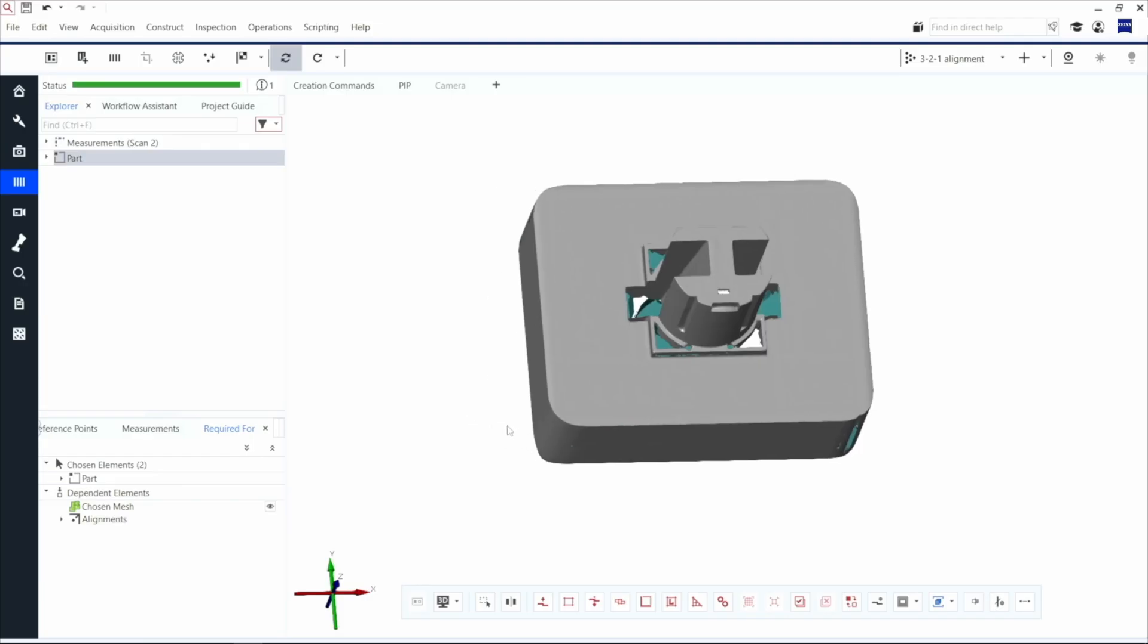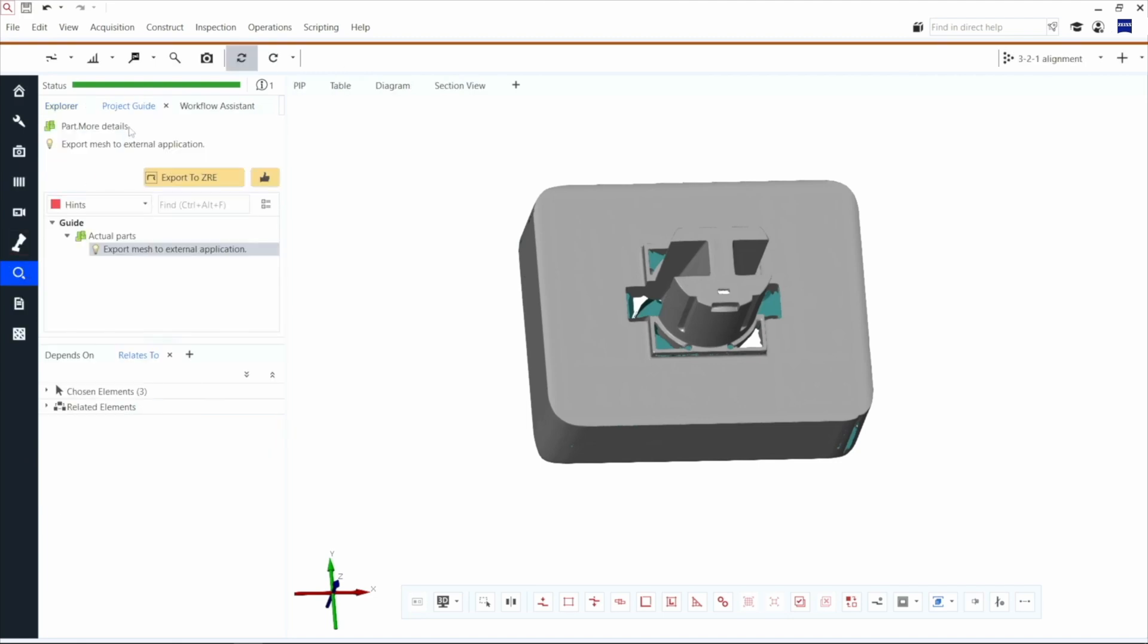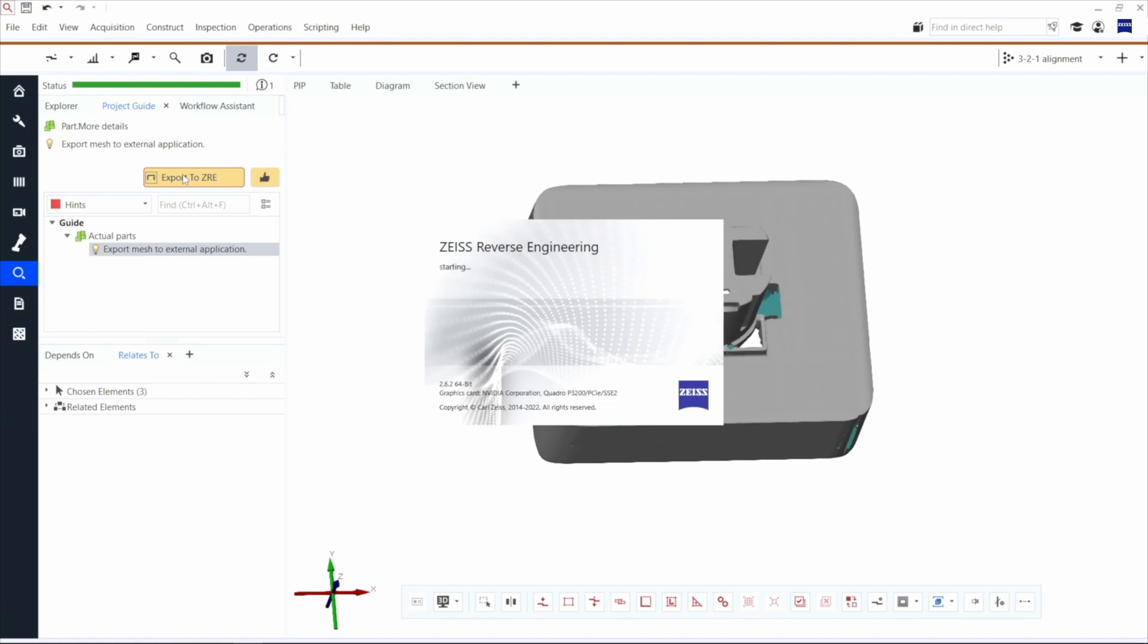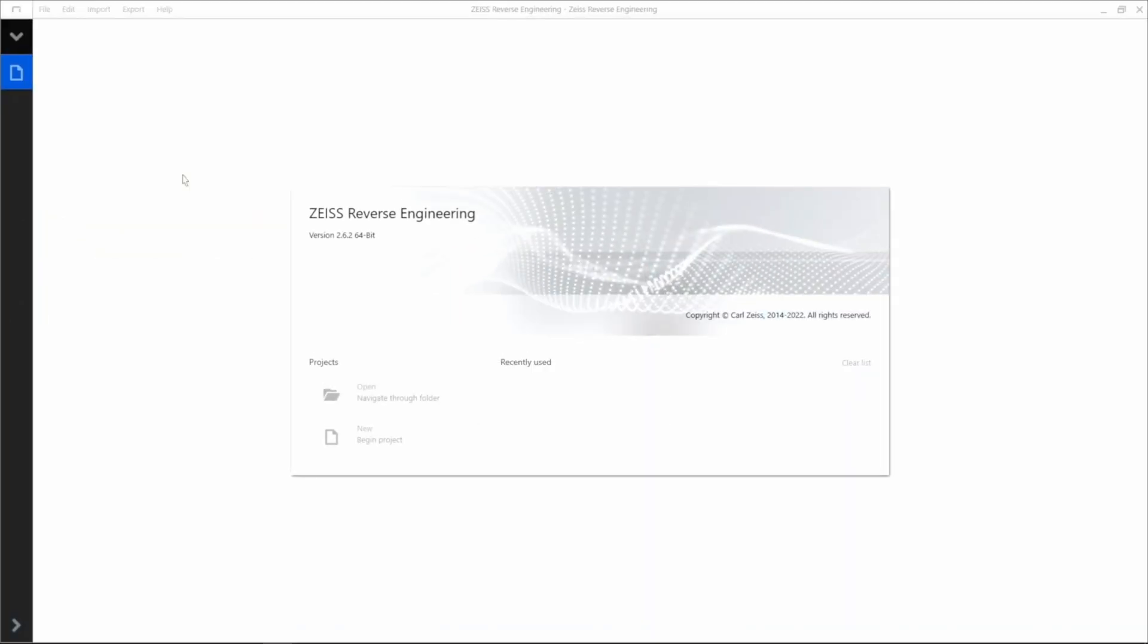Let us export the STL file to Zeiss Reverse Engineering with the use of Direct Interface, which automatically starts Zeiss Reverse Engineering, opens a new project, and imports the aligned STL data of the part.